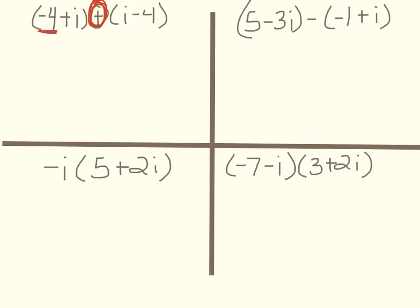We're going to do the real part first. Negative 4 and negative 4 makes negative 8. And then we're going to add the imaginary parts. i plus i is 2i. It's that easy.